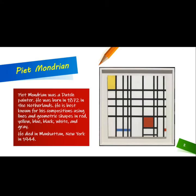Piet Mondrian was a Dutch painter. He was born in 1872 in the Netherlands. He is best known for his compositions using lines and geometric shapes in red, yellow, blue, black, white, and gray.